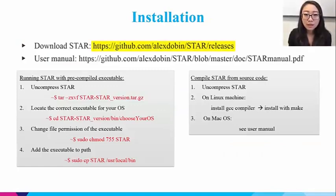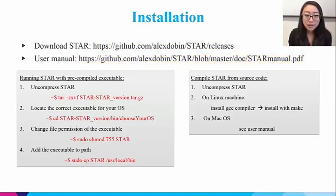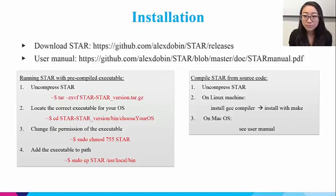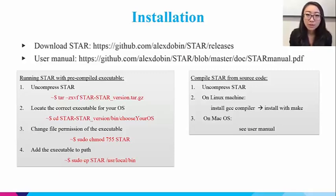First, let's install STAR. This is the GitHub repository for the current release of STAR — we'll download the source code. The STAR user manual can be found at the listed URL. It gives detailed instructions on the usage of STAR, its parameters, mapping strategy, and troubleshooting information. Once we download the source code, we need to first uncompress it in the desired directory. After decompressing, we can see subfolders for binaries, documents, source code, and other files. The pre-compiled executables are good enough to perform STAR runs and come with Linux and Mac versions. We just need to change the file permissions with the chmod command and copy the executables to our local binary folder, which will allow invoking STAR from any directory. Alternatively, if you prefer to compile STAR from source code, you can use the make command on Linux. It's a bit tricky with macOS — I suggest you read the user manual for the details.